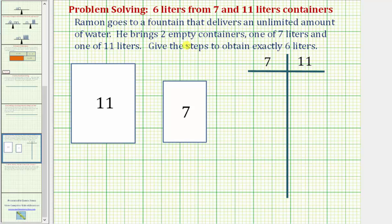Hopefully you've already thought about this problem. One helpful hint would be to recognize that we could obtain exactly six liters if we were able to get exactly ten liters in the eleven-liter container. We could then fill up the seven-liter container, pour exactly one liter into the eleven-liter container, which would fill it up, leaving us with six liters in the seven-liter container. And that will actually be our last step in order to accomplish this goal.